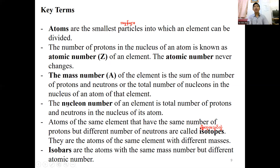The nucleon number of an element is the total number of protons and neutrons in the nucleus of its atoms. Atoms of the same element that have the same number of protons but a different number of neutrons are called isotopes. They are atoms of the same element with different masses.